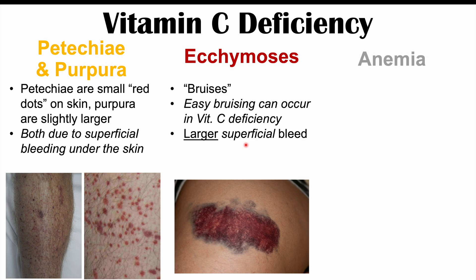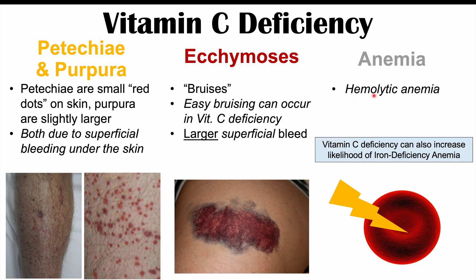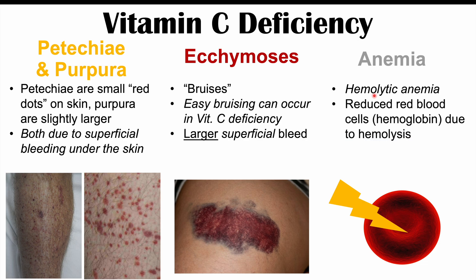We can also see anemia more likely to occur in vitamin C deficiency — specifically hemolytic anemia, meaning breakdown of red blood cells. It's reduced red blood cells or reduced hemoglobin due to hemolysis, a destruction of red blood cells. Because of the anemia, patients can also experience the signs and symptoms associated with anemia.